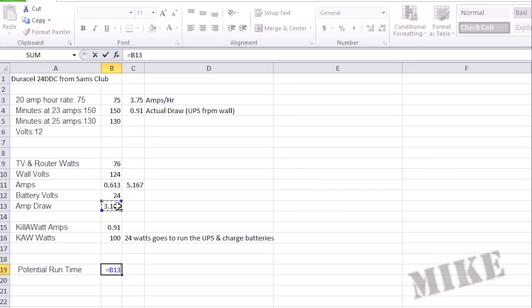My effective capacity here is going to be the amp draw over the 20-hour rate amp draw. If I put these in parentheses here, it's going to give us 84%. So I might get a little bit more than my expected capacity of 75 amp hours. So if we take 75 divided by this number, it's going to give us a bigger number.